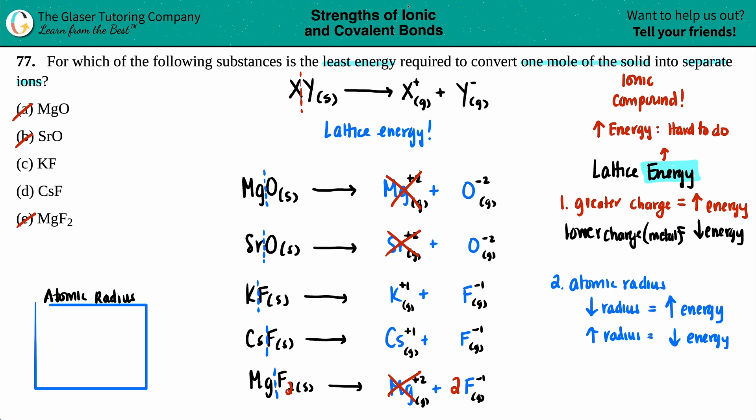On the periodic table, potassium is in group 1 but cesium is below it. Remember as you go down the periodic table, atomic radius increases. That means potassium is a little dot and cesium is way larger. The greater the radius, the lower the amount of energy. We want the least amount of energy. Cesium is bigger.